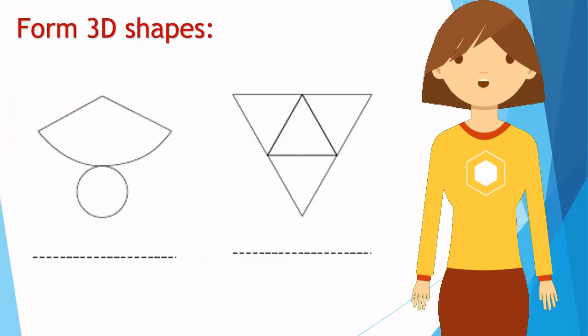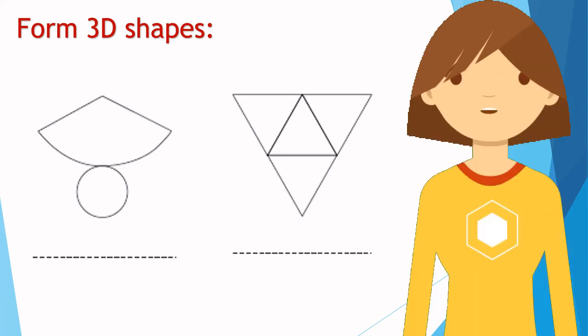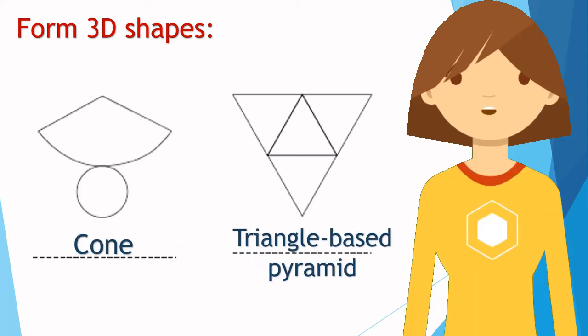Can you tell what 3D shapes can be formed using these nets? Yes, that's right — these nets make a cone and a triangle-based pyramid.